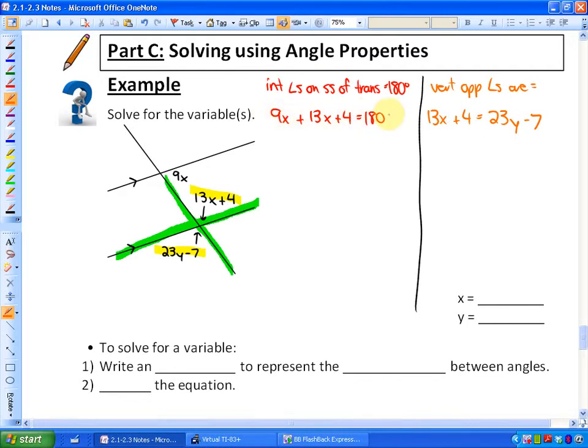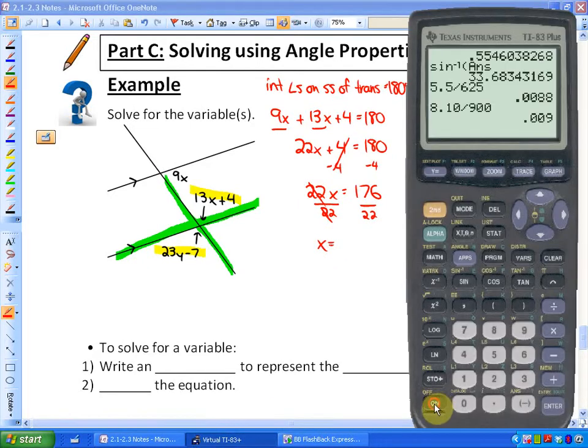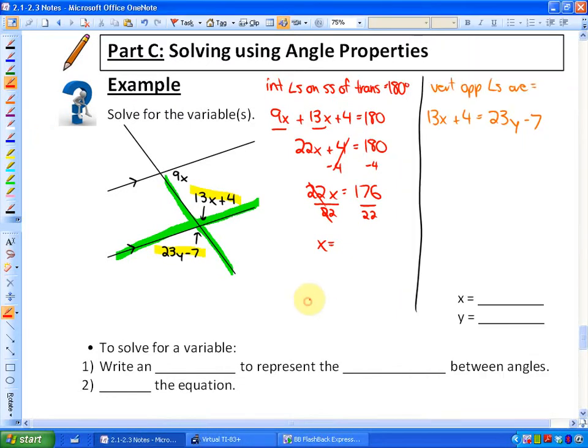We can solve for x in this first equation. If we collect like terms, the 9x and the 13x, we have 22x plus 4 is equal to 180. Algebraically solving, subtract 4 from each side, so 22x is equivalent to 176. And if you divide the coefficient 22 from both sides, you will get that x is equal to 176 divided by 22, which is 8.